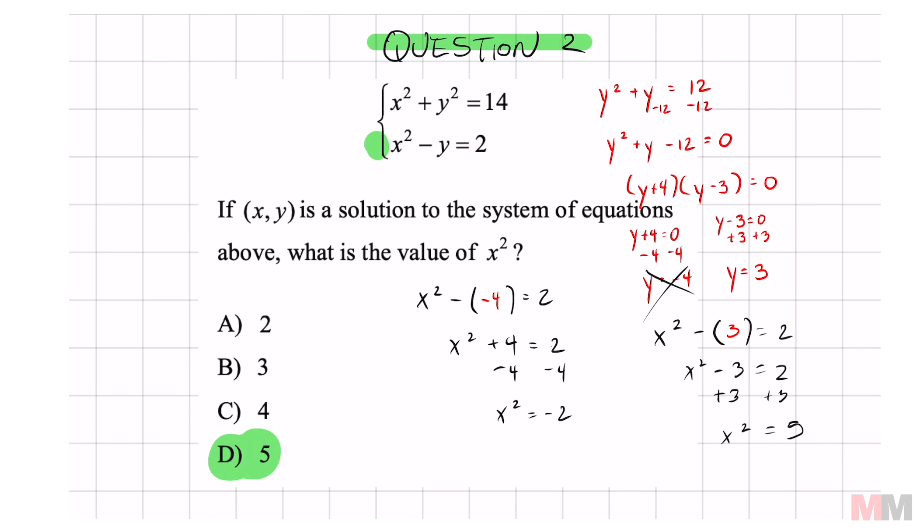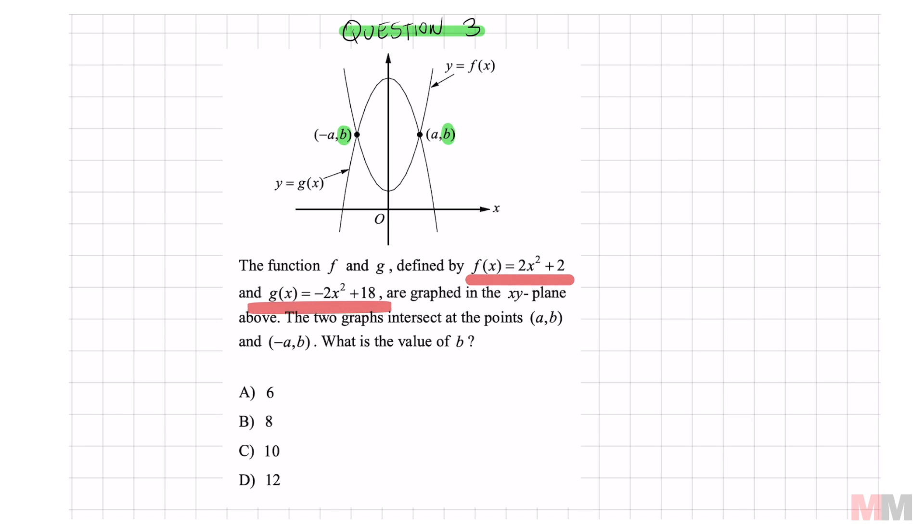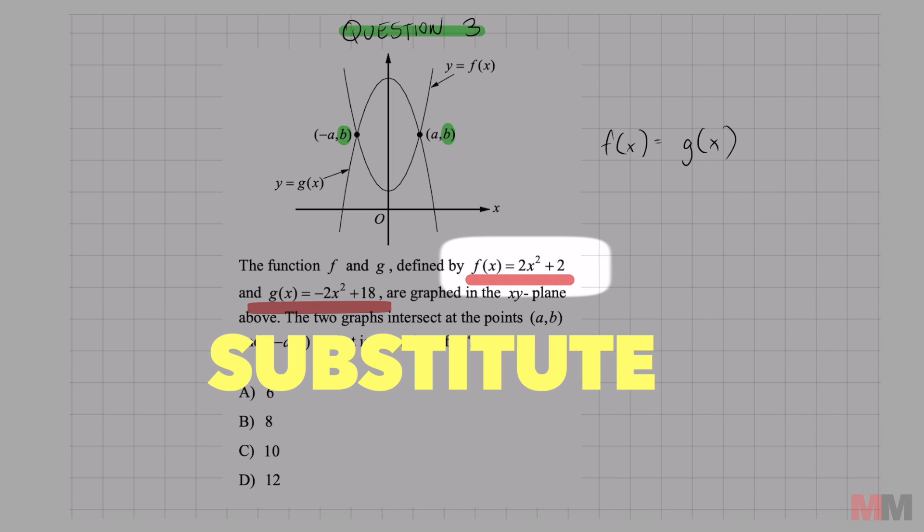Breathe. We got one more. Promise it's worth it. Anytime you got two equations and they cross, you're trying to find where these two equations or functions are equal to each other. In this question, we're trying to find the value b. So I got these two functions right here. I got this one and I got this one. I need to set them equal to each other because that is going to find my intersection point. So we got f of x equals g of x. And now we just substitute.